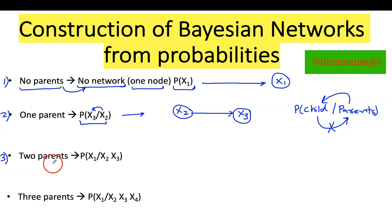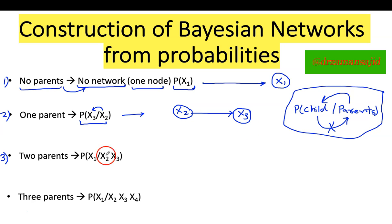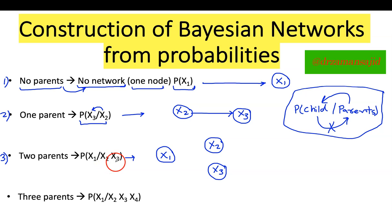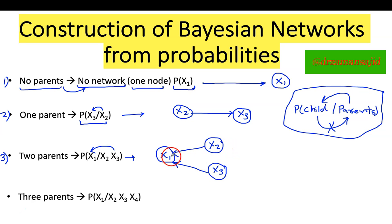Let's work on Case 3, where we have two parents. It doesn't matter how many parents we have — as long as you use this formula, the procedure remains the same. I draw X1, X2, and X3. In Bayesian networks, a node can have more than two parents. X2 is a parent and X3 is a parent, so the direction is from X2 to X1 and from X3 to X1. Always make sure you put your direction, because Bayesian networks are always directional.